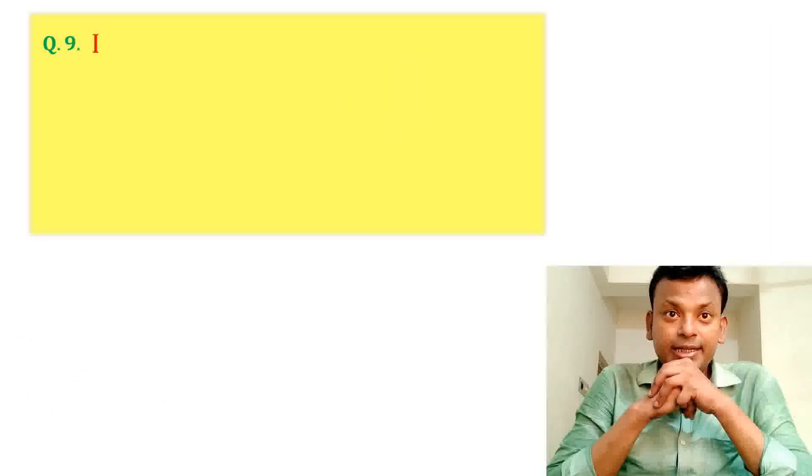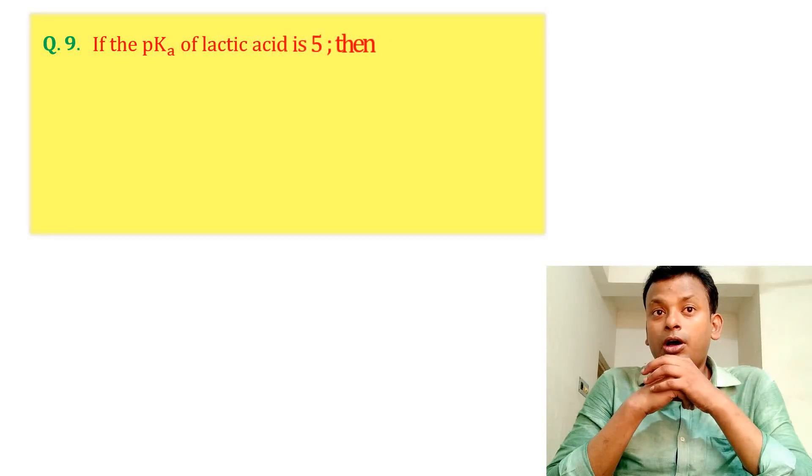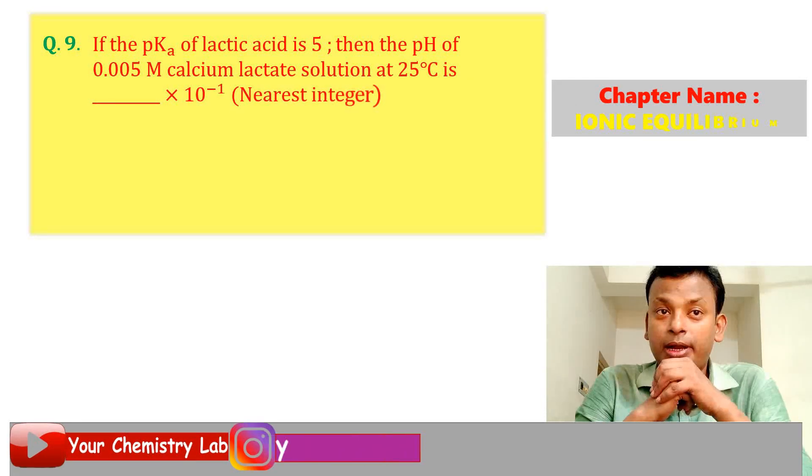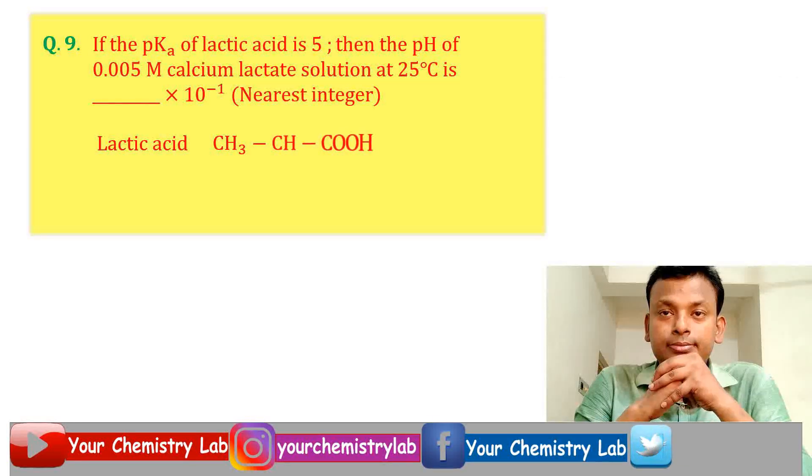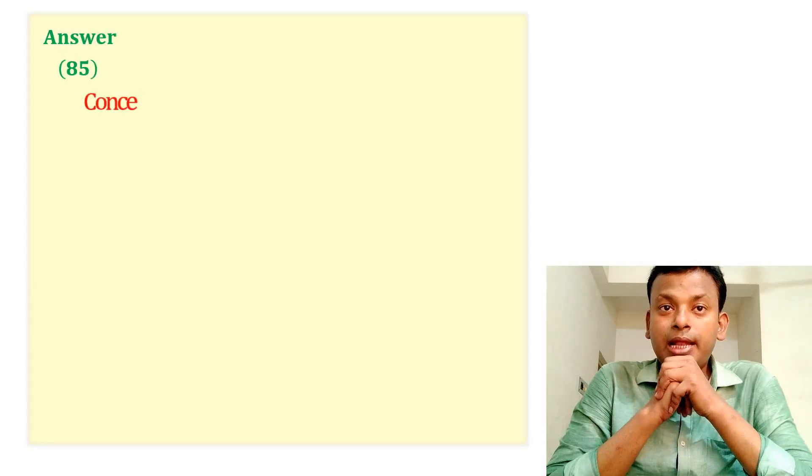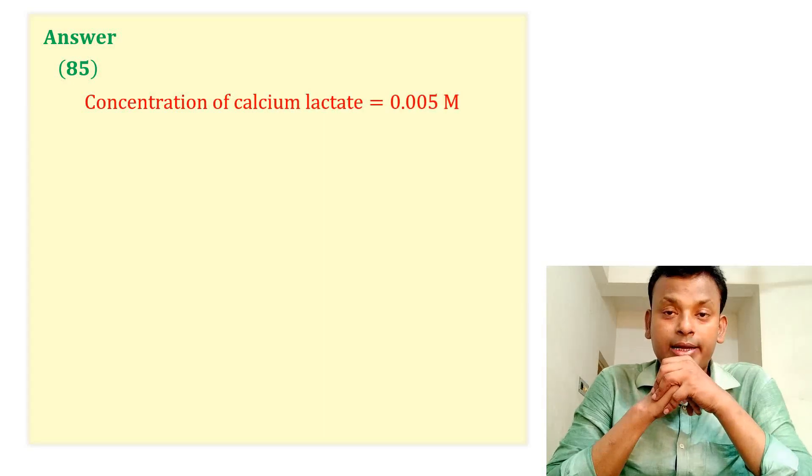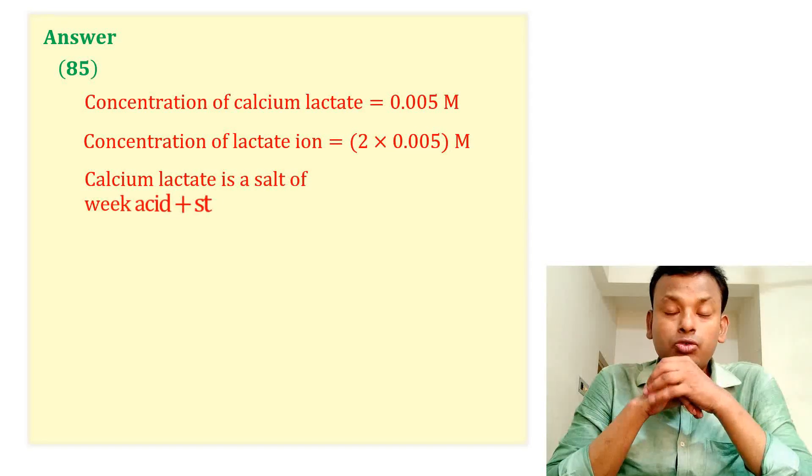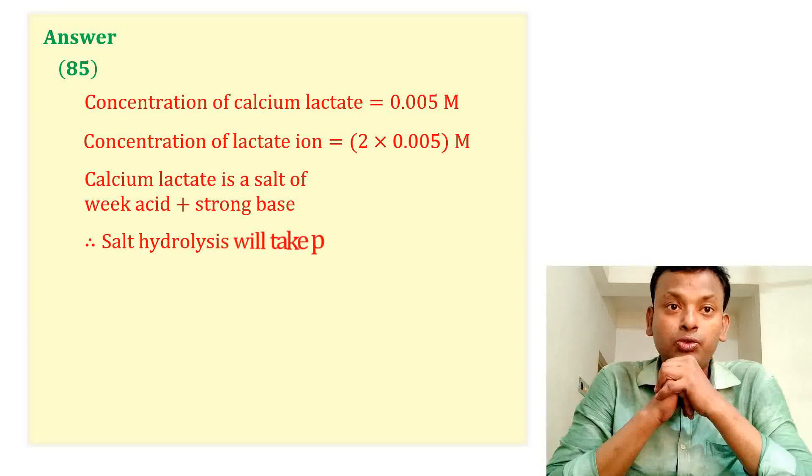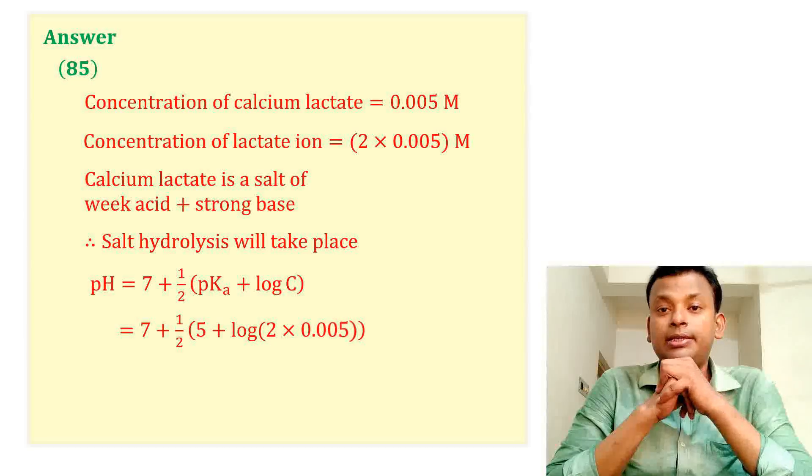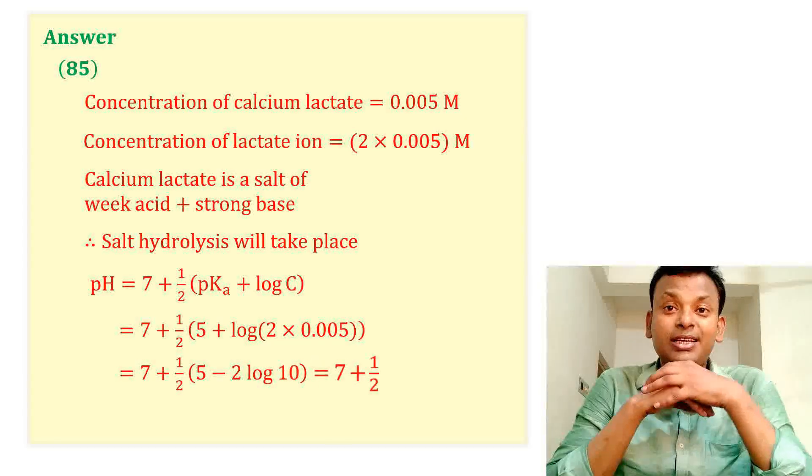Question nine: If the pKa of lactic acid is 5, then the pH of 0.005 molar calcium lactate solution at 25 degree centigrade is dash into 10 to the power minus 1. This is the lactic acid. Answer is 85. Concentration of calcium lactate equals to 0.005 molar, concentration of lactate ion 2 into 0.005 molar. Calcium lactate is a salt of weak acid plus strong base, so salt hydrolysis will take place. pH equals to 7 plus half into pKa plus log C. Putting all values, pH equals to 8.5, that is 85 into 10 to the power minus 1.